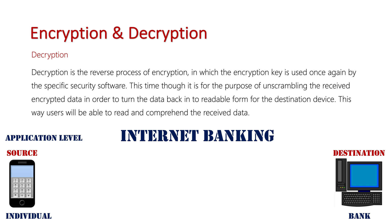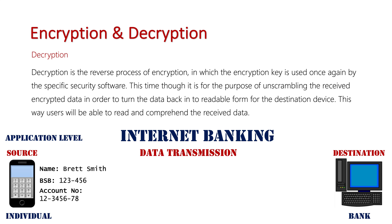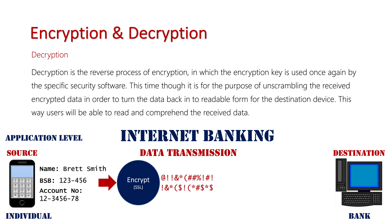So what's going to happen here in order to encrypt data? Firstly, at the source, they're going to enter in their details in order to do this financial transaction — their name, BSB number, account number, and likely some number that illustrates what financial transaction they want to take place, say $250. Before anything happens, because we are still at the application level, the encryption takes place prior to data transmission. So we encrypt that data using the SSL protocol. Then when the data is transmitted, it is just some scrambled gibberish.